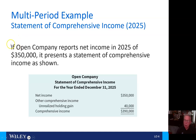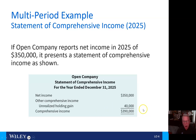If Open Company reports net income in 2025 of $350,000, it presents a statement of comprehensive income as shown. Here we have net income of $350,000, plus $40,000 of other comprehensive income — unrealized holding gain — for a total comprehensive income of $390,000.